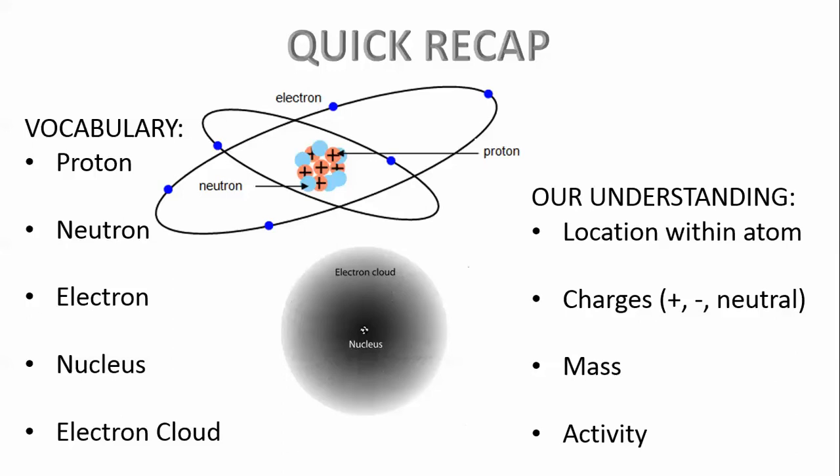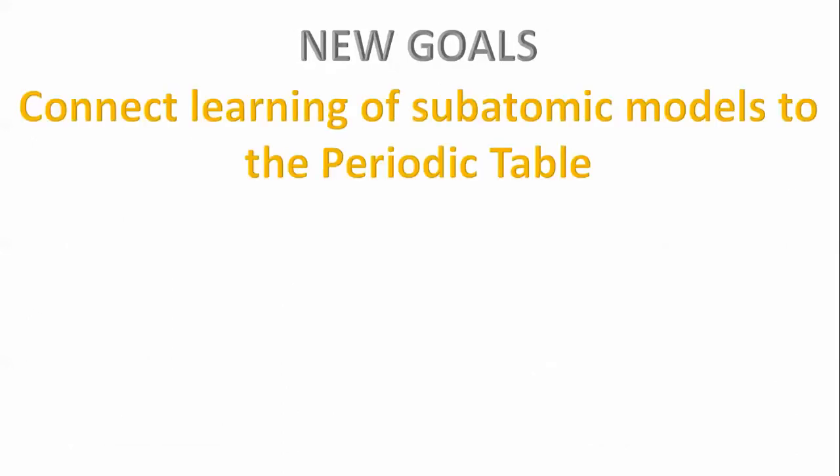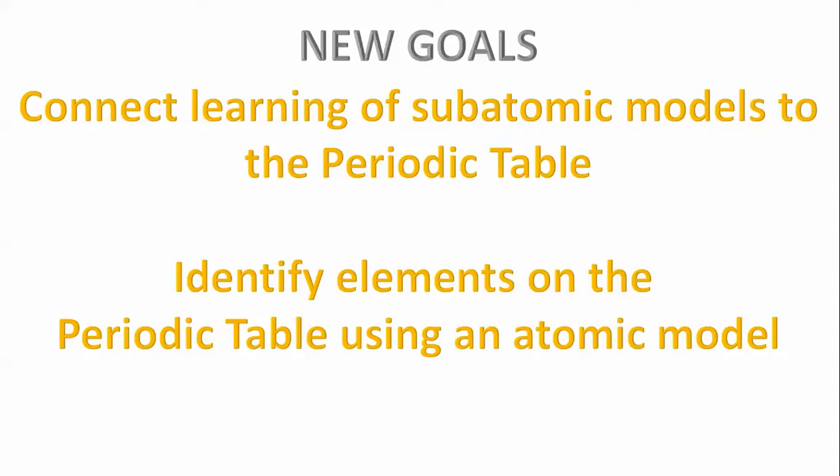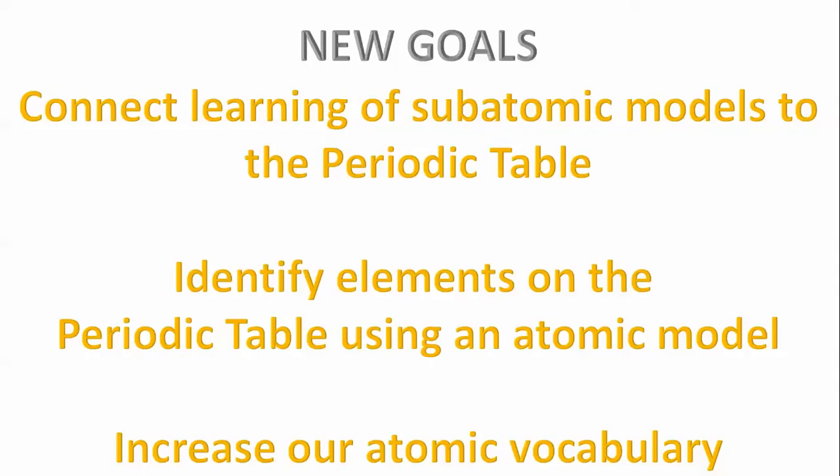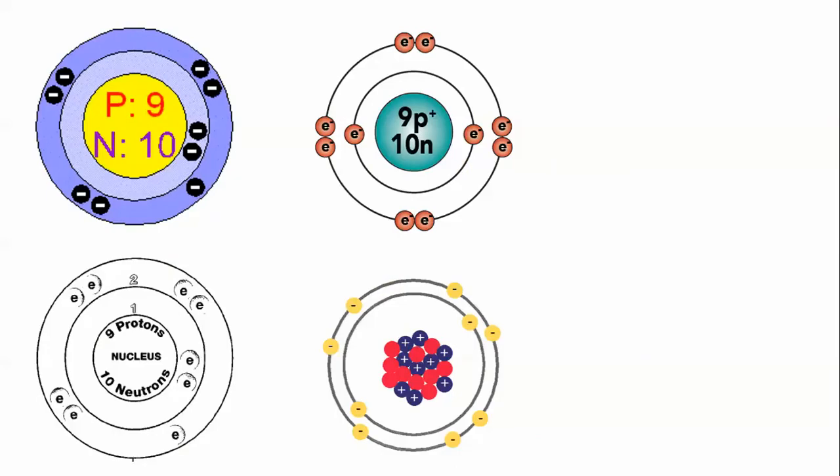We have some new goals that we're going to use today as we move forward. Our job today is to connect the learning of our subatomic models to the periodic table, to be able to identify elements on the periodic table using an atomic model, and to increase our atomic vocabulary. Taking these goals, we're about to look at four different models of the exact same atom. See if you can figure out what these models have in common, and what might be the determining factor in making them the same atom.